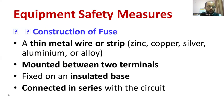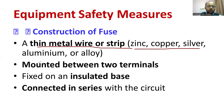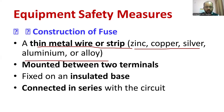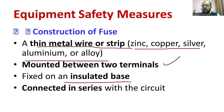How about the construction of fuse? The fuse is constructed using a thin metal wire or strip. It is made up of zinc, copper, aluminium, or any type of alloy. Alloy means a combination of one or two or more metals. It is usually mounted between two terminals and fixed on an insulated base. That insulated base is usually made up of a material called porcelain.